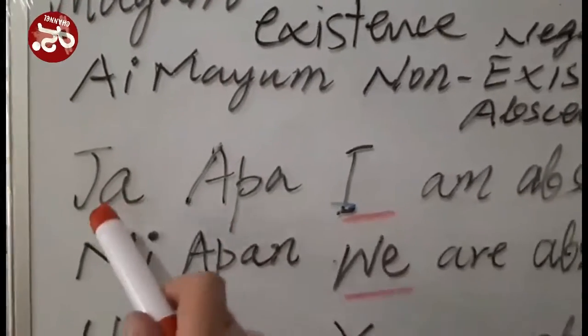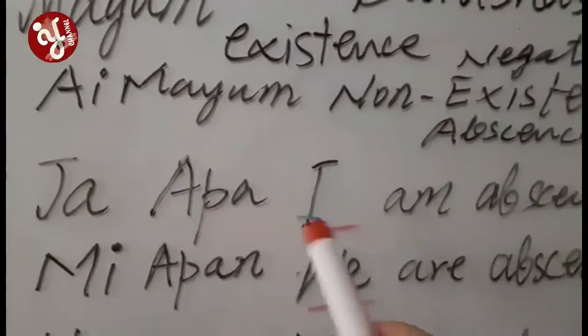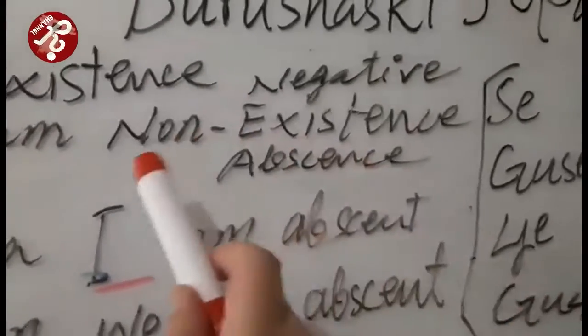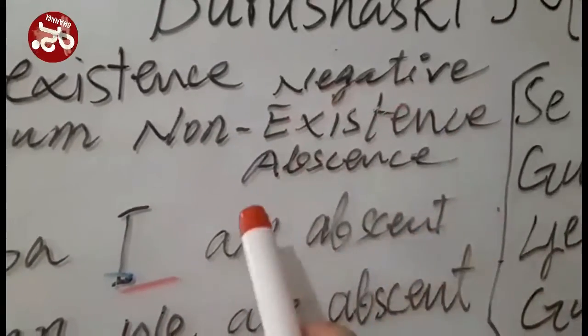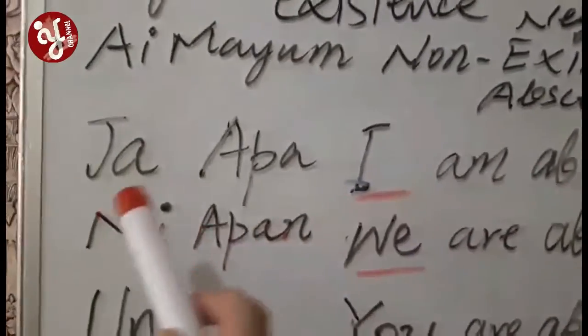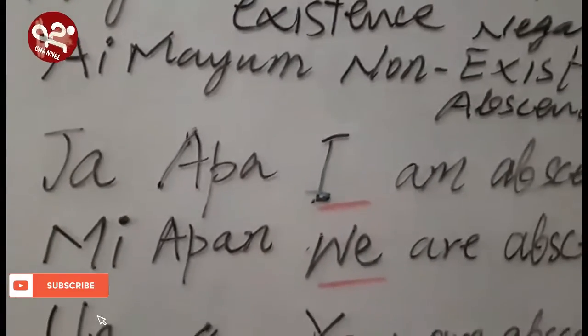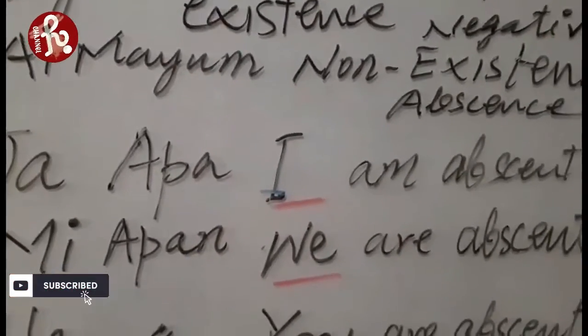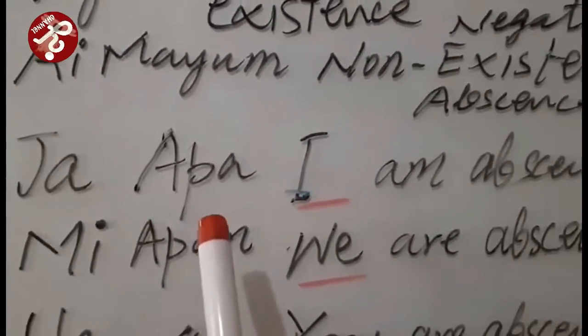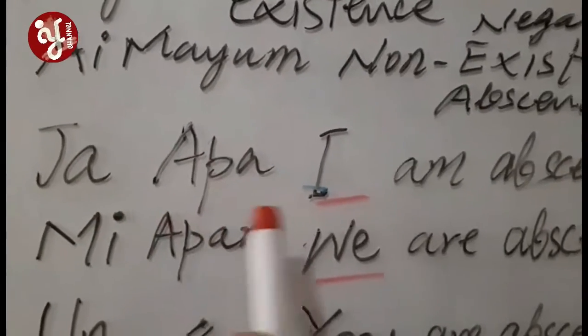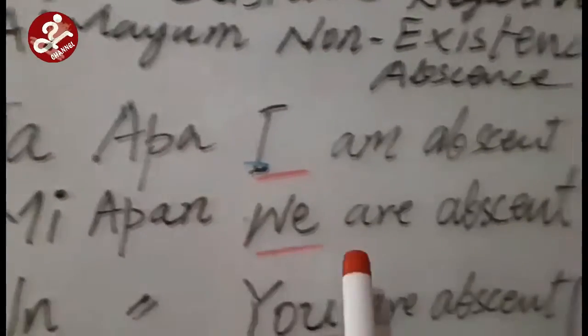So for Ja: Appa means 'I am absent' or 'I am not there.' When you say the answer in negative, like absent or non-existence, you say Appa. Ba means 'I am present' and Appa means 'absent.' So 'I am not' is Ja Appa. Me Appa means 'we are absent.'